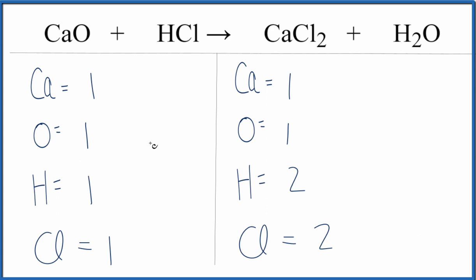Let's try to fix the hydrogens. It looks like the hydrogens and the chlorines, if we could double those, we'd be done. So we can change the coefficient in front of the HCl, make that a two, and this two applies to the whole HCl molecule here.